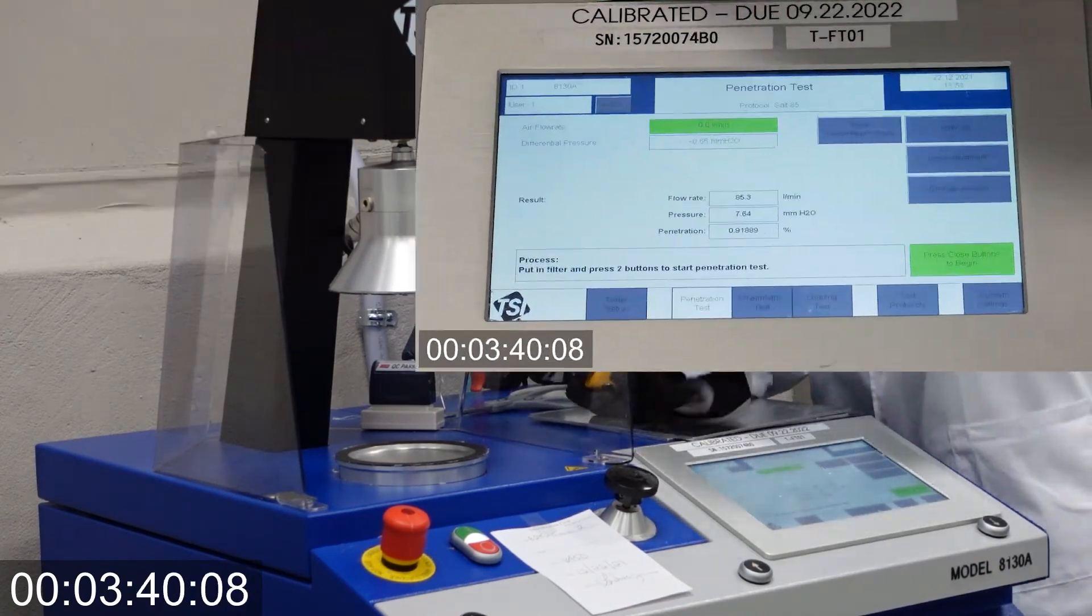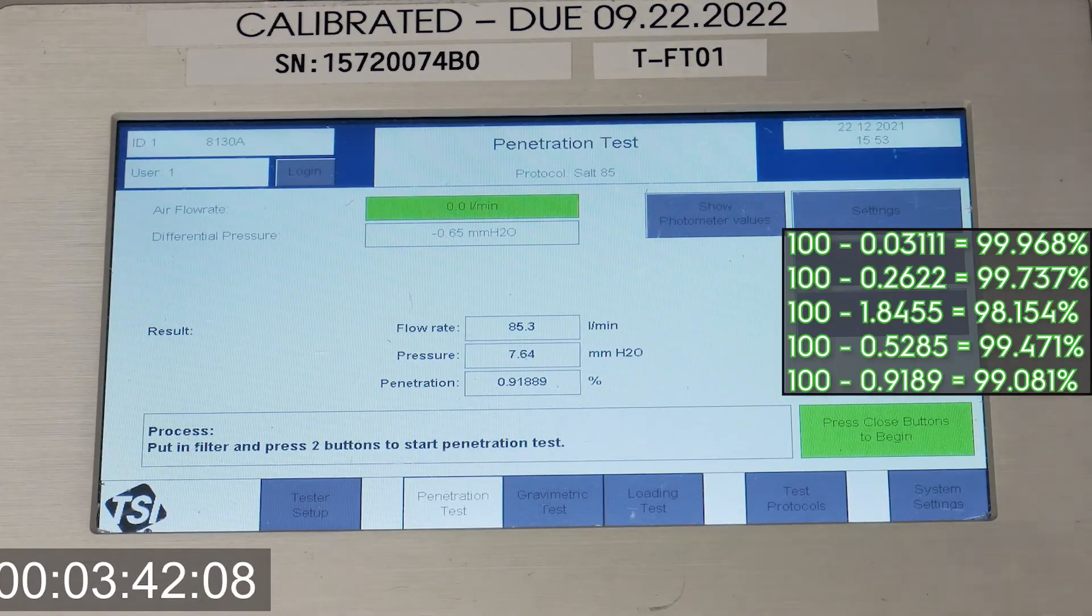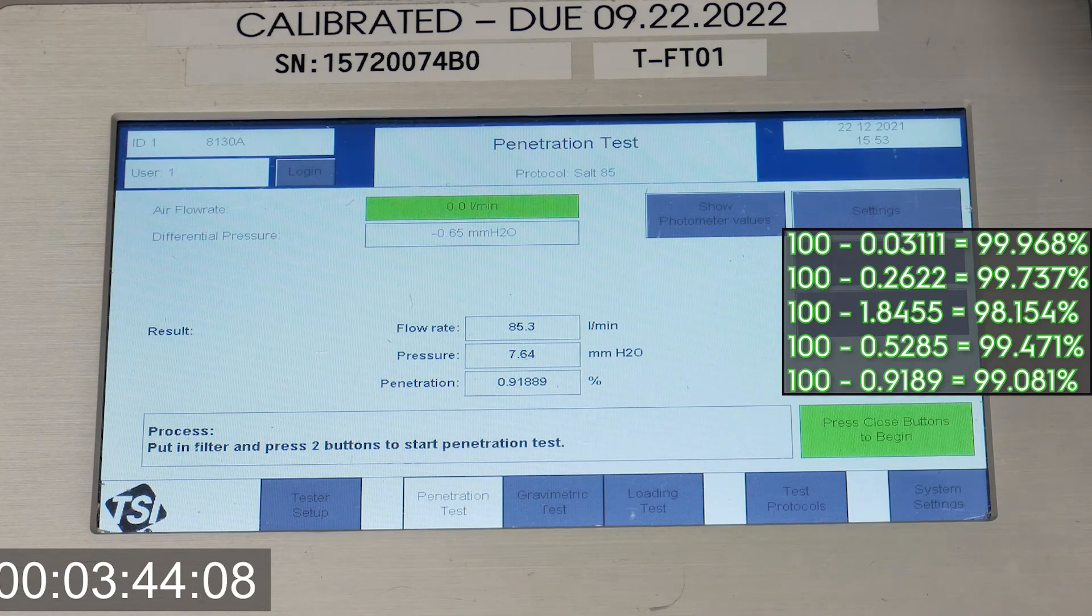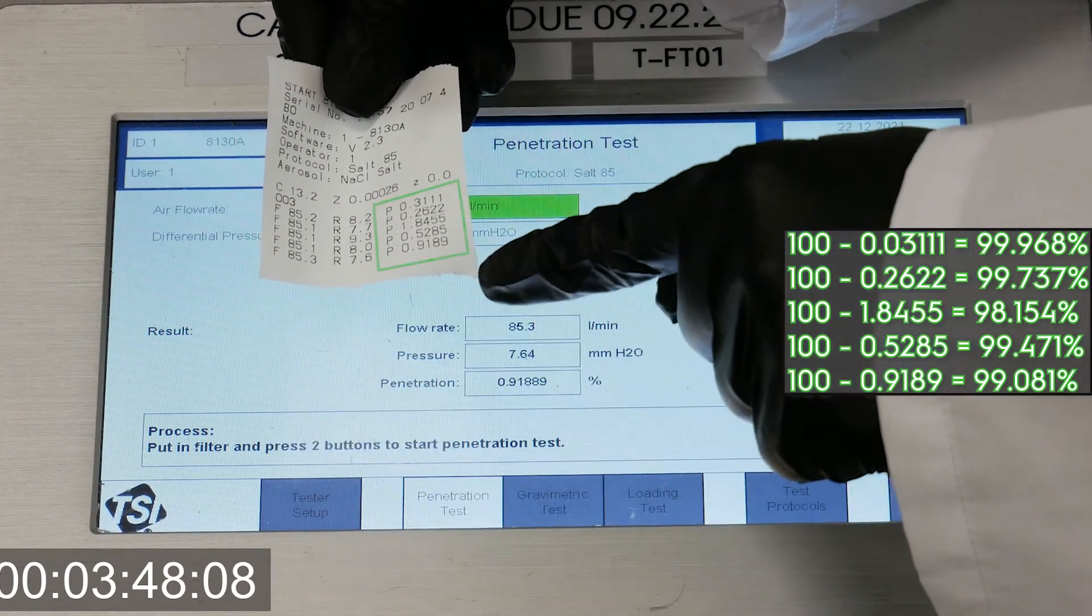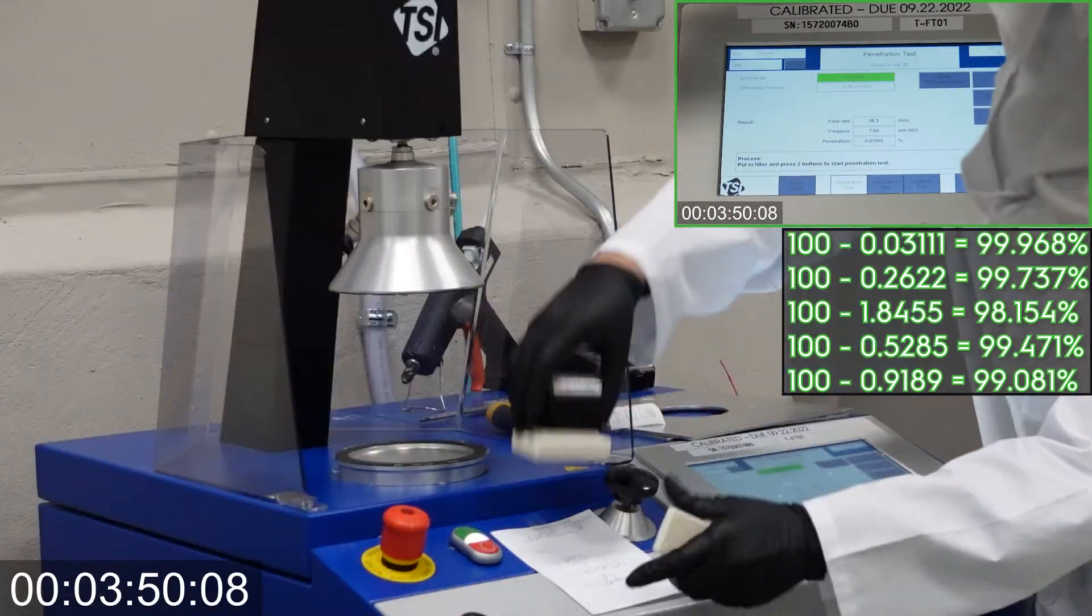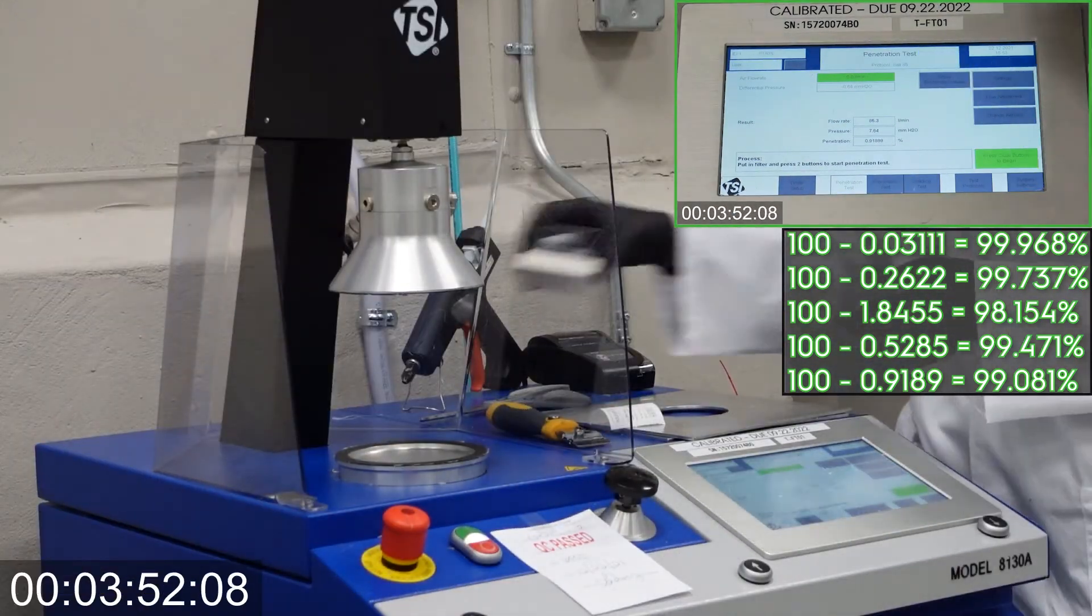Well folks, there you have it. Our masks and respirators tested less than 1-2% for particle penetration, which means 98-99% filtration efficiency.